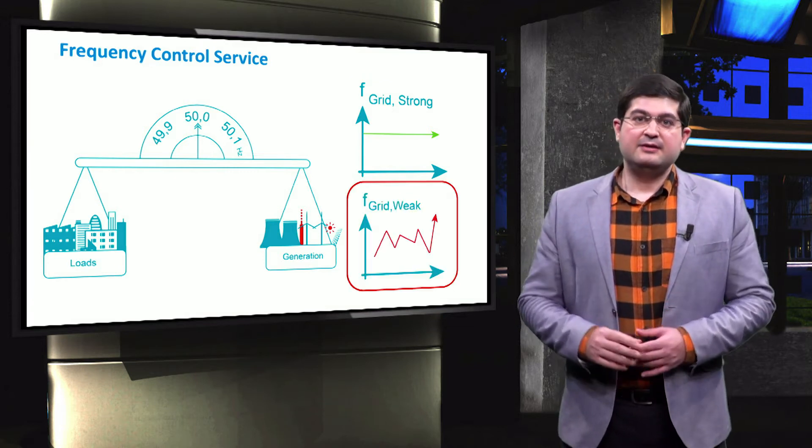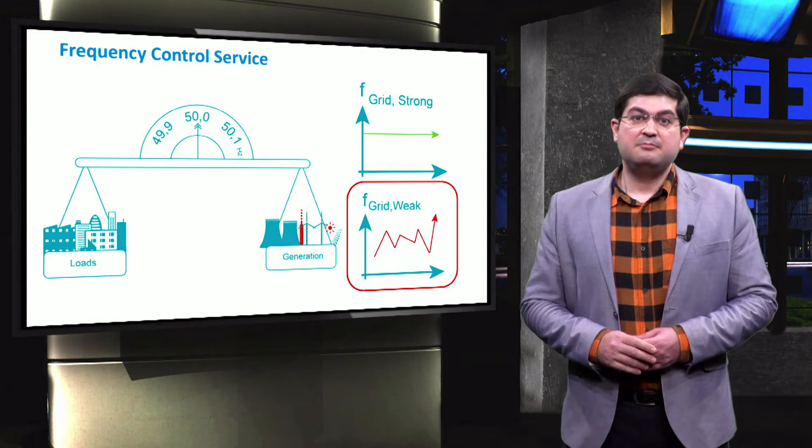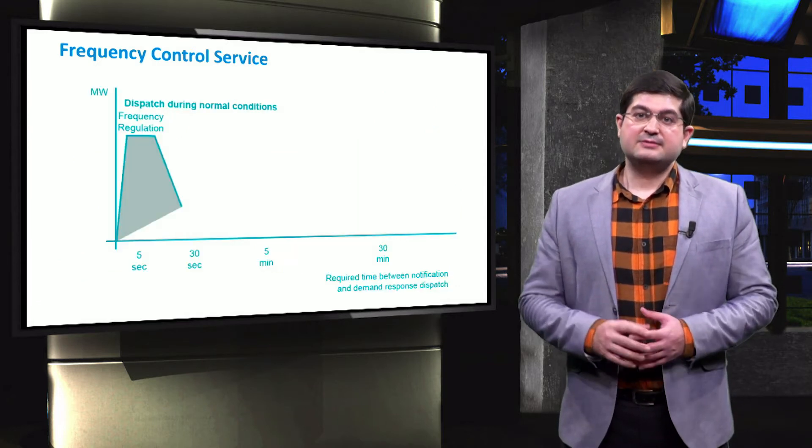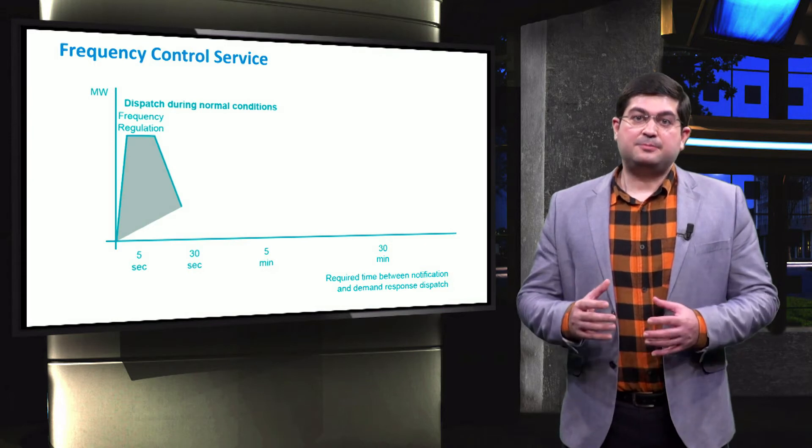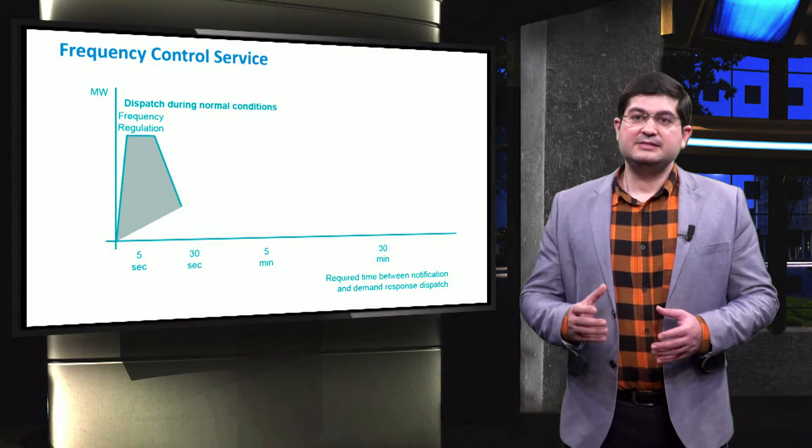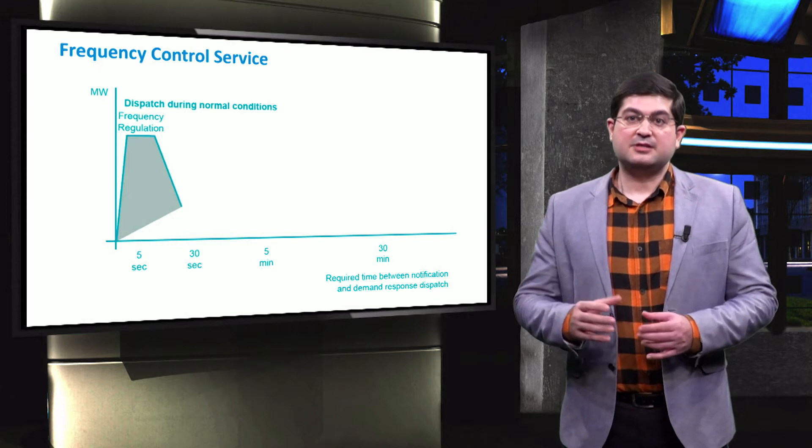On the other hand, if the grid is weak, then the microgrid components might also affect the frequency. If needed, microgrids are able to support the grid by provision of frequency control. This service is provided in various time scales.